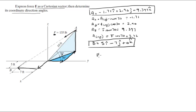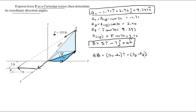To find vector AB — the vector from A all the way to B — you're going to do B minus A on the X, the Y, and the Z. So you're going to do BX minus AX, BY minus AY, and BZ minus AZ. Plugging the numbers in: (5 minus negative 1.71)i plus (negative 7 minus 2.96)j plus (0 minus 9.397)k.